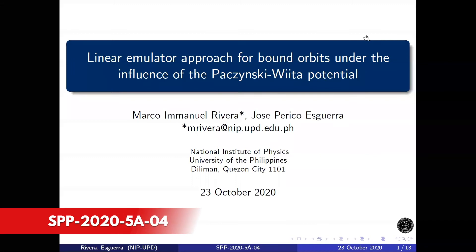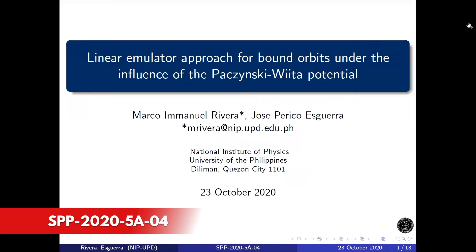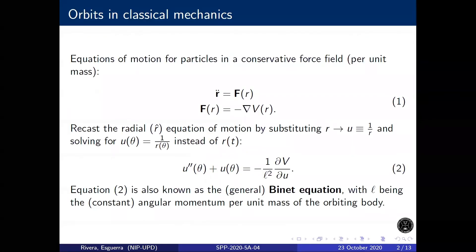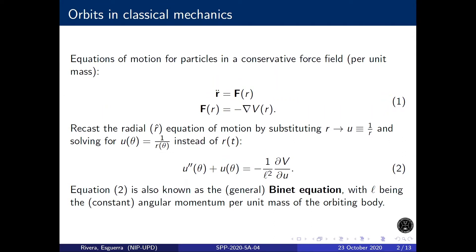Today I'm going to talk about linear emulator approach for bound orbits under the influence of the Bakchinsky-Wita potential. Recall the equations of motion for particles in a conservative force field. In the attempt to reduce the problem into a system of one-dimensional differential equations, we arrive at the Binet equation for the radial component. We see this equation when we prove Kepler's first law.